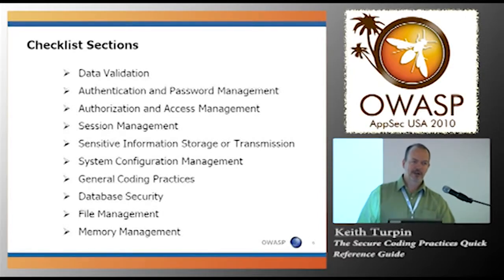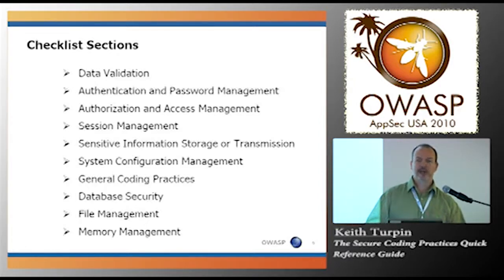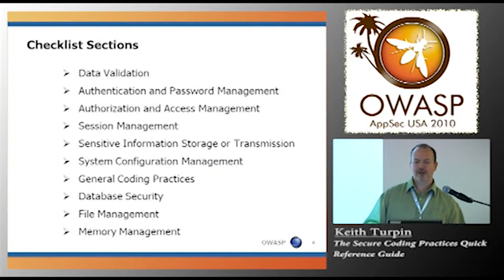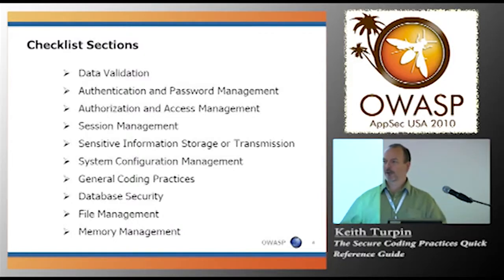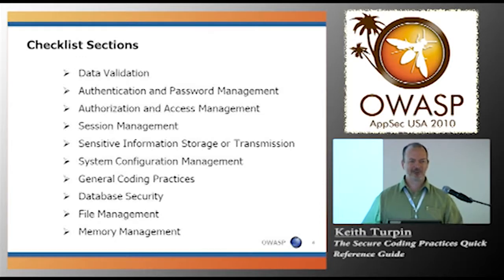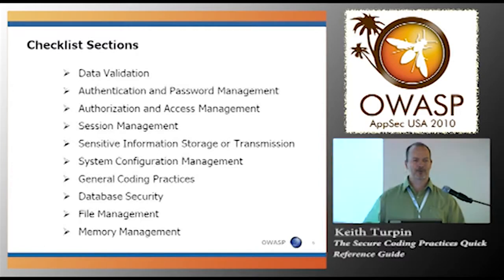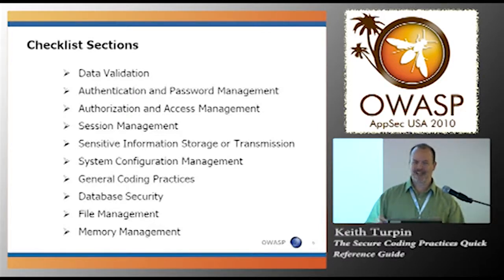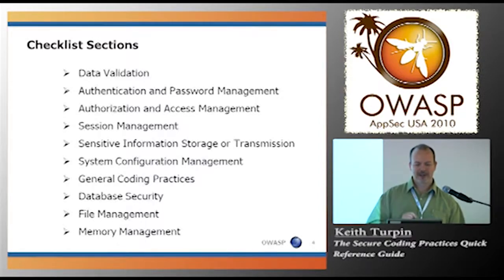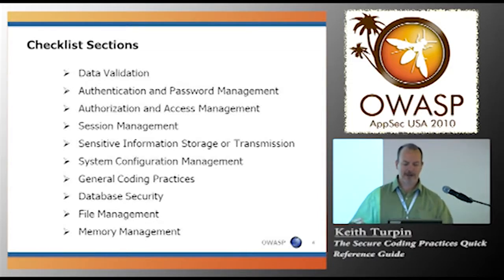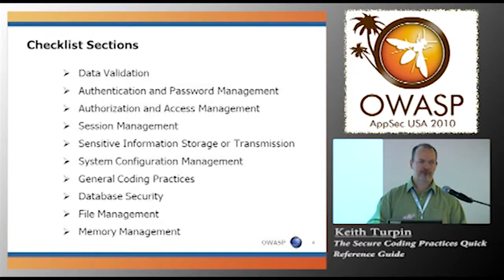These are the sections of the checklist. The sections are designed so you can look at your functional areas and go to those areas — for instance, if you're taking user input, go to data validation. If you're doing authentication, go to the authentication section. So it breaks out into these areas. The general coding practices section — fourth from the bottom — is the junk drawer of this document. It's stuff that was important, shouldn't be left out, but doesn't fit well into a category, and I didn't want to create a bunch of two-item categories. So general coding practices is the document junk drawer.